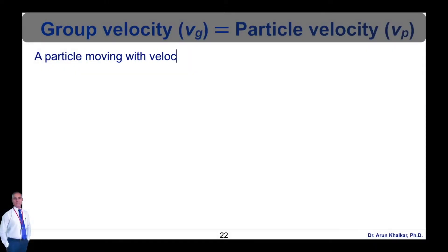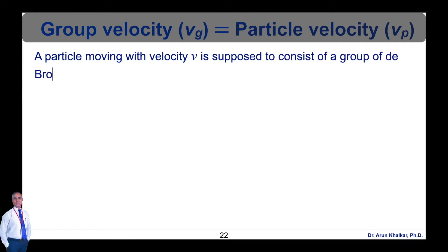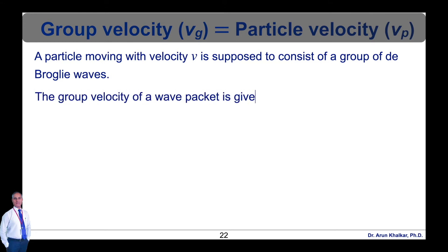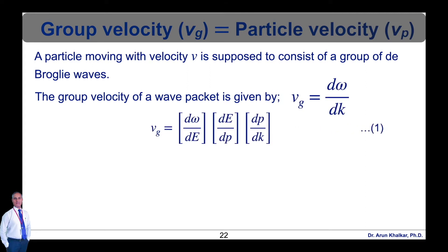A particle moving with velocity v is supposed to consist of a group of de Broglie waves. Therefore, the group velocity of the wave packet can be written as vg = dω/dk. Rearranging this equation, we can write vg = (dω/dE) · (dE/dp) · (dp/dk), simply introducing the two terms dE and dp. Let this be equation number 1.